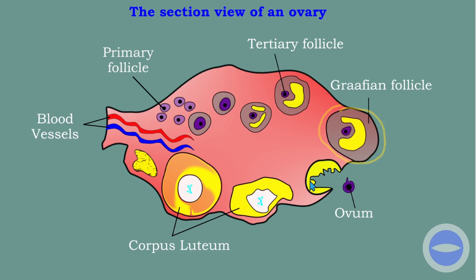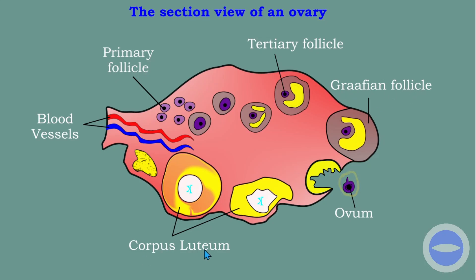The follicle cells do not exit the ovary — only the egg exits to move to the fallopian tube. After ovulation has taken place, we no longer call it a Graafian follicle; we call it the corpus luteum. It's important to know the difference: primary follicle, Graafian follicle, and after ovulation, corpus luteum. You must be able to label this structure, including the blood vessels.